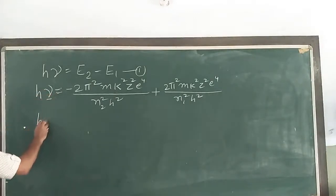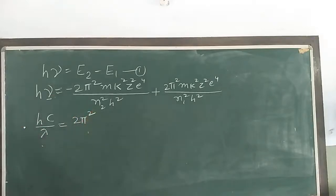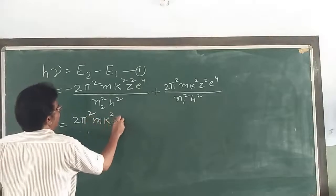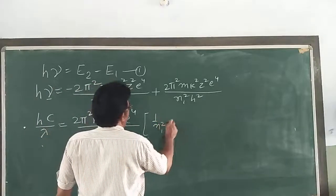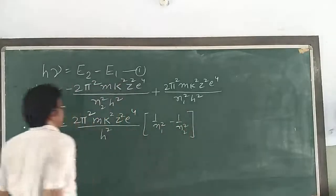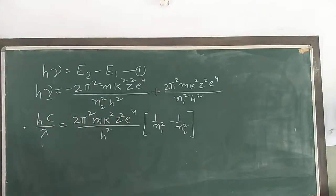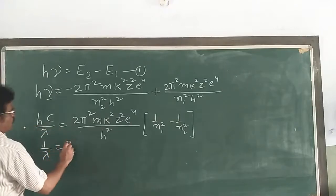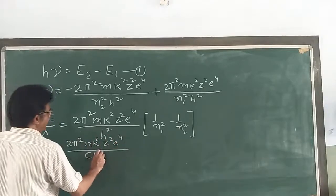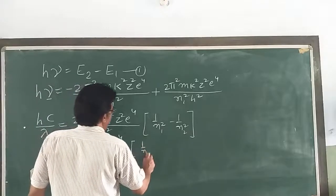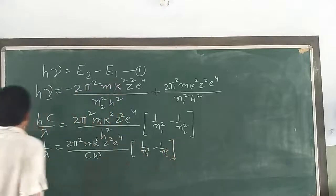Since ν = c/λ, we can write 1/λ = ν̄ (wave number). Taking common factors: 1/λ = (2π²Mk²Z²e⁴)/(ch³) × (1/N1² − 1/N2²). This expression gives us the wave number of the radiation emitted.